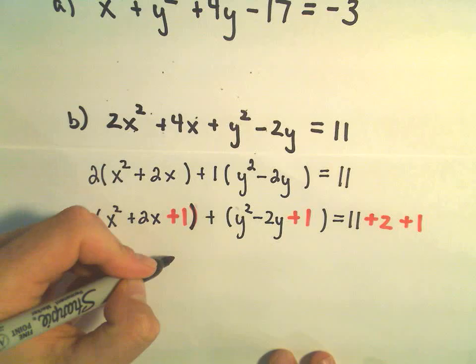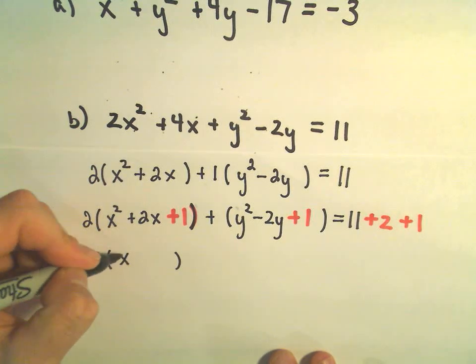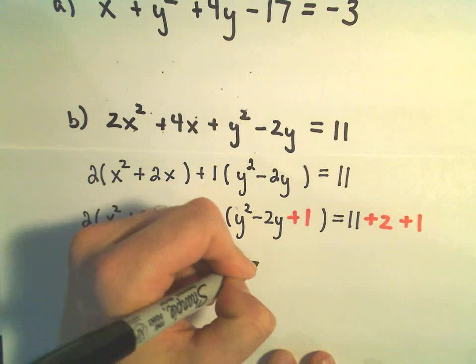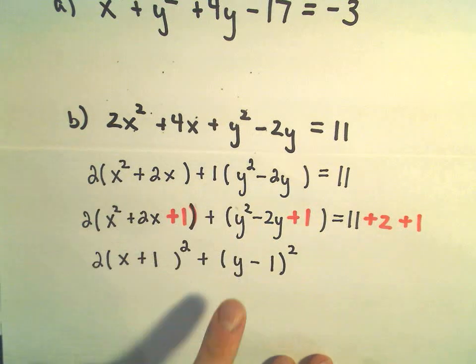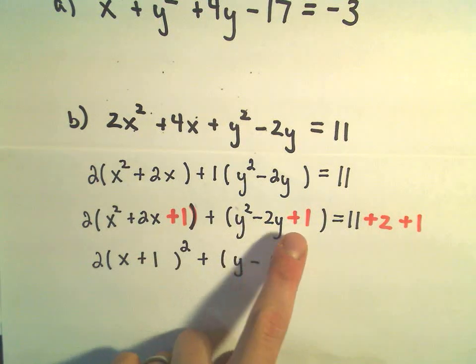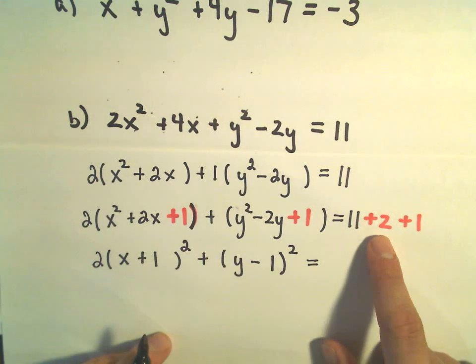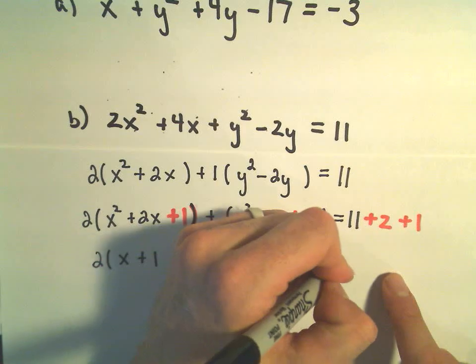And now I can write x squared plus 2x plus 1 as x plus 1 quantity squared. We would have y minus 1 quantity squared. That would give us our y squared minus 2y plus 1. So let's see, 11 plus 2 is 13 plus 1 is 14.